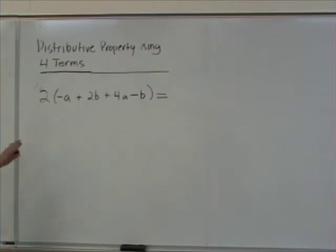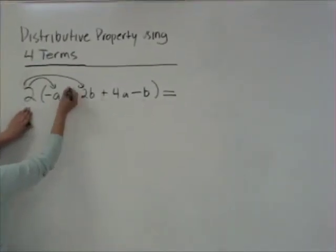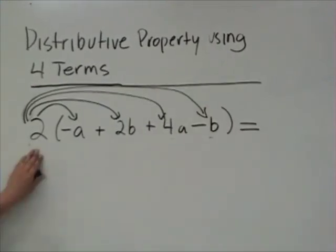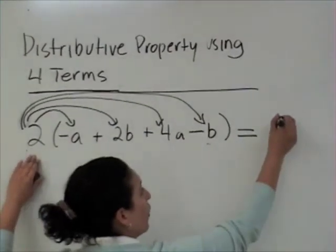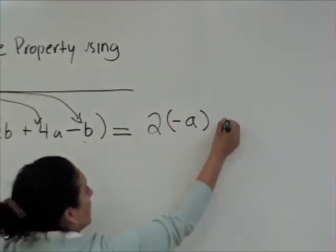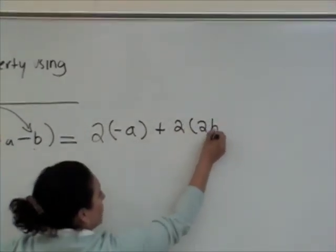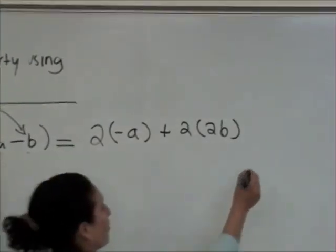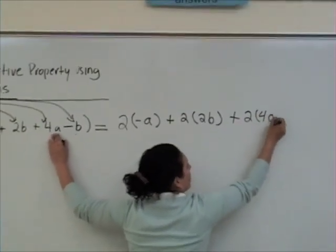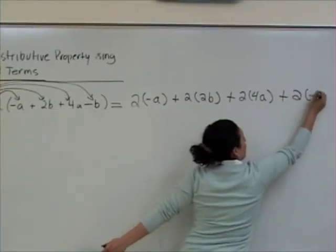So we have 2 that multiplies negative A, and 2 that multiplies 2B, 2 that multiplies 4A, and 2 that multiplies negative B. We're going to be using the distributive property. So the first term is going to be 2 times negative A, plus 2 times 2B, plus 2 times 4A, plus 2 times negative B.